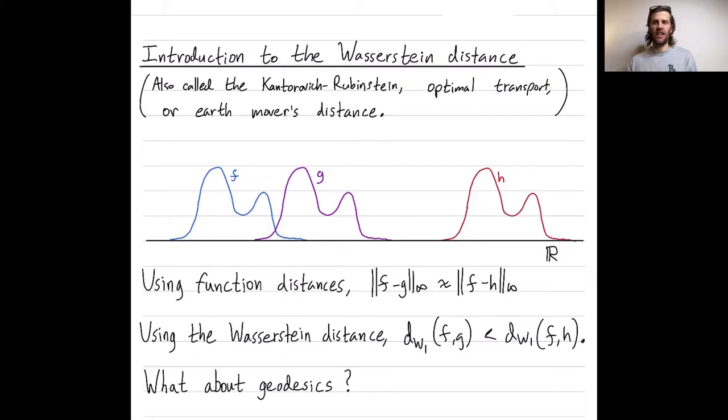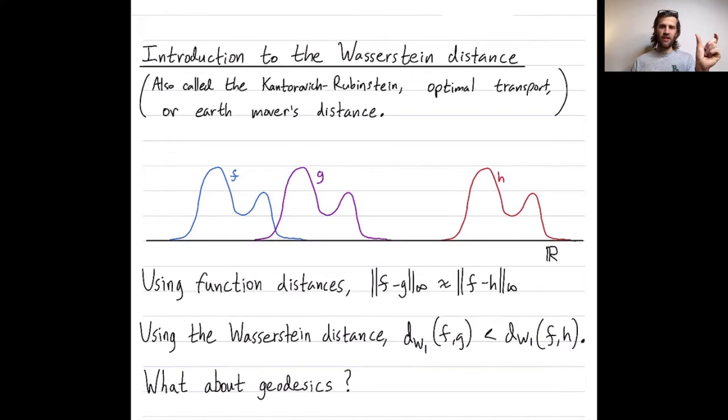Another intuitive thing I wanted to talk about, which is really important for why people care about the Wasserstein distance, is what do geodesics look like in the space of functions under the sup-norm metric or under the Wasserstein distance? A geodesic is a shortest path. So let's consider the geodesic, or a shortest path, from this function f to this function h. Using the sup-norm, what does a geodesic look like?